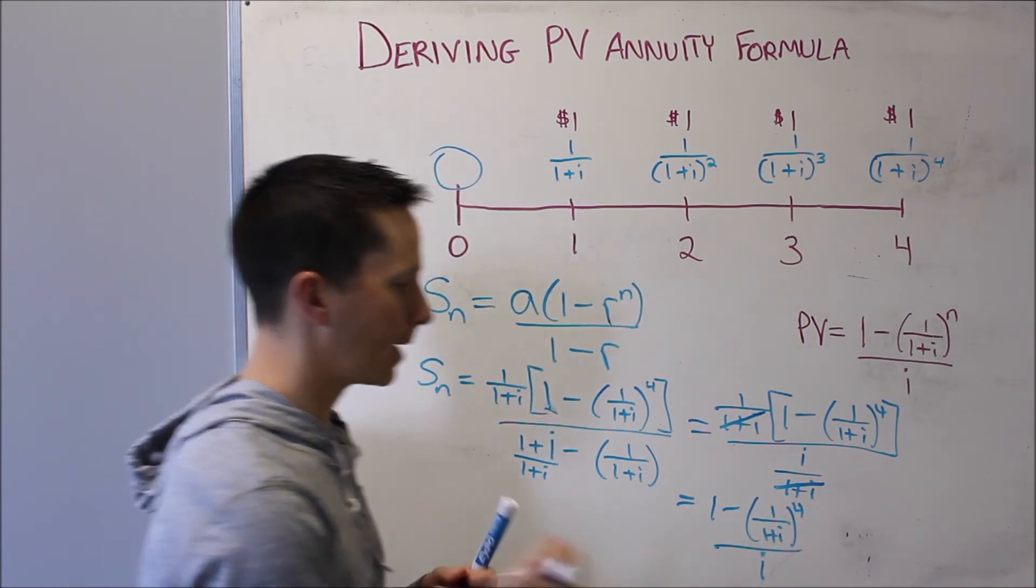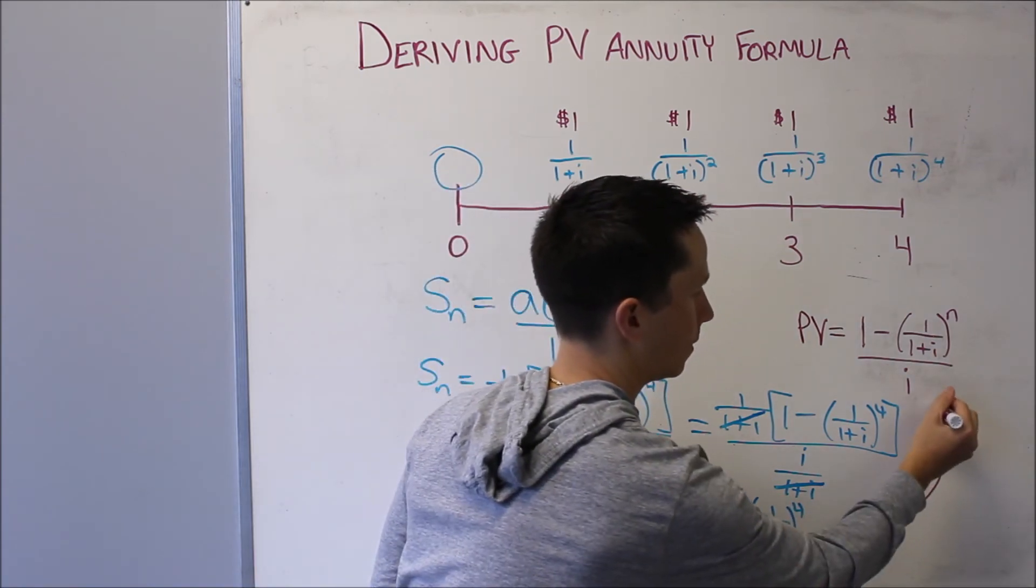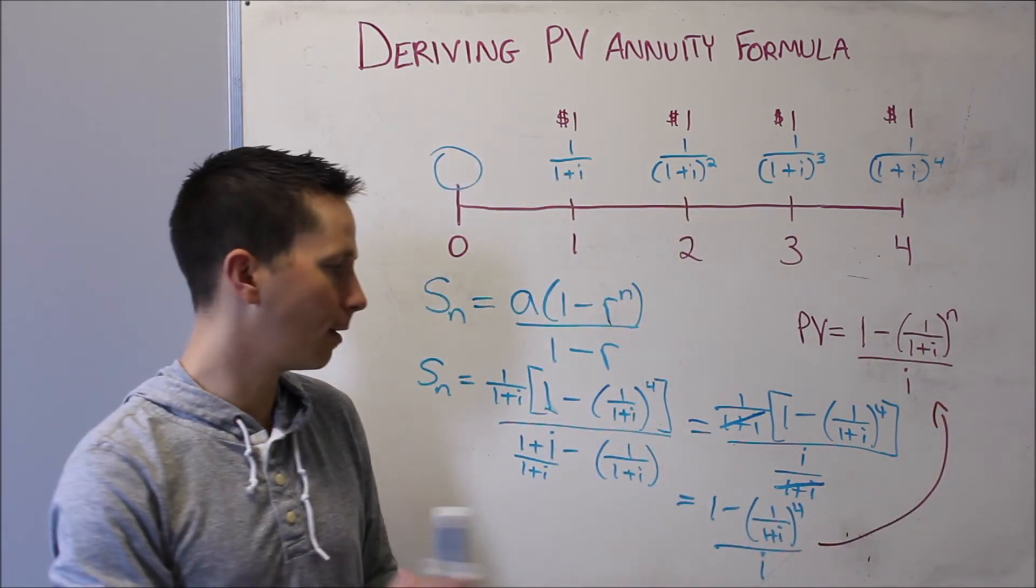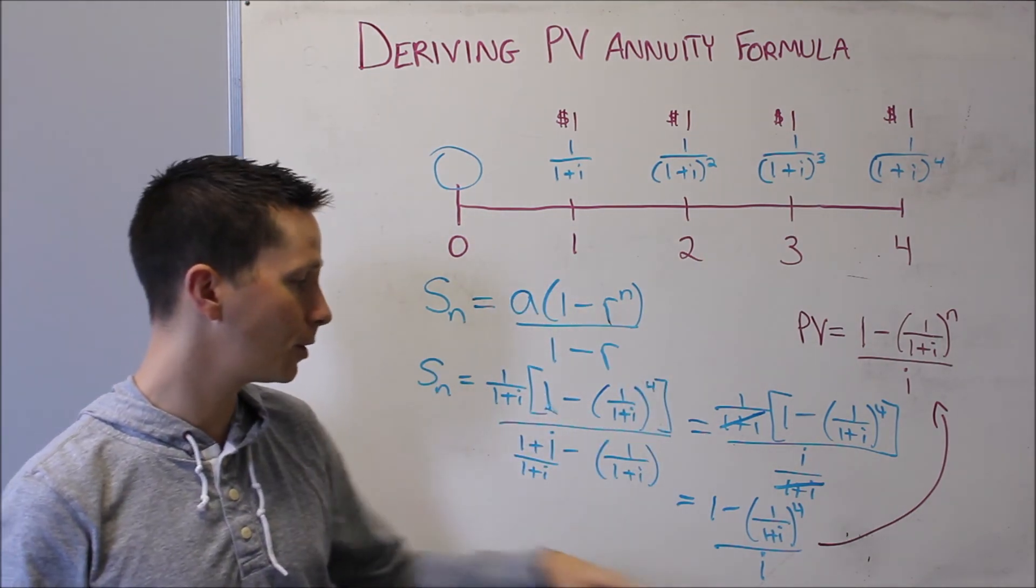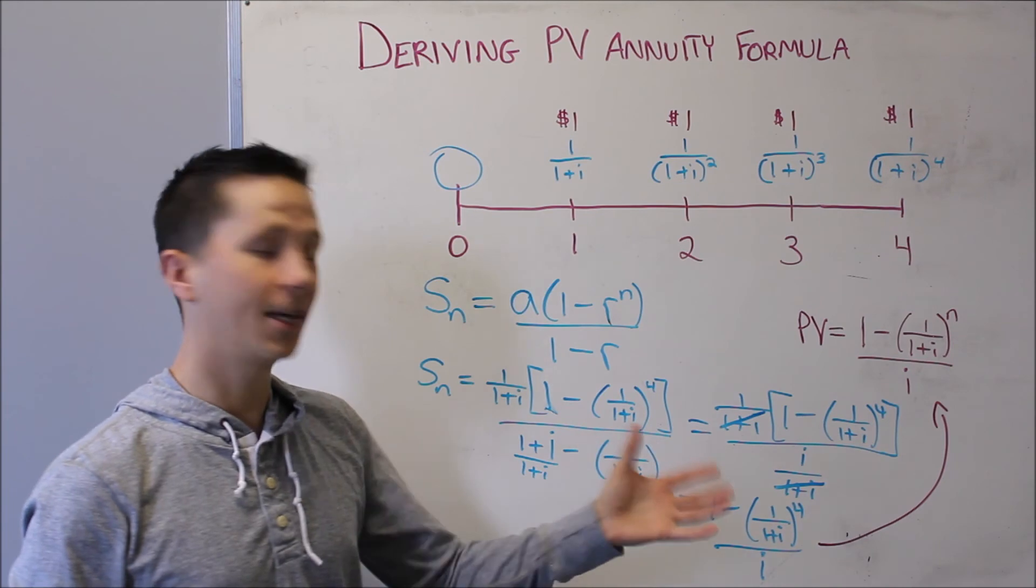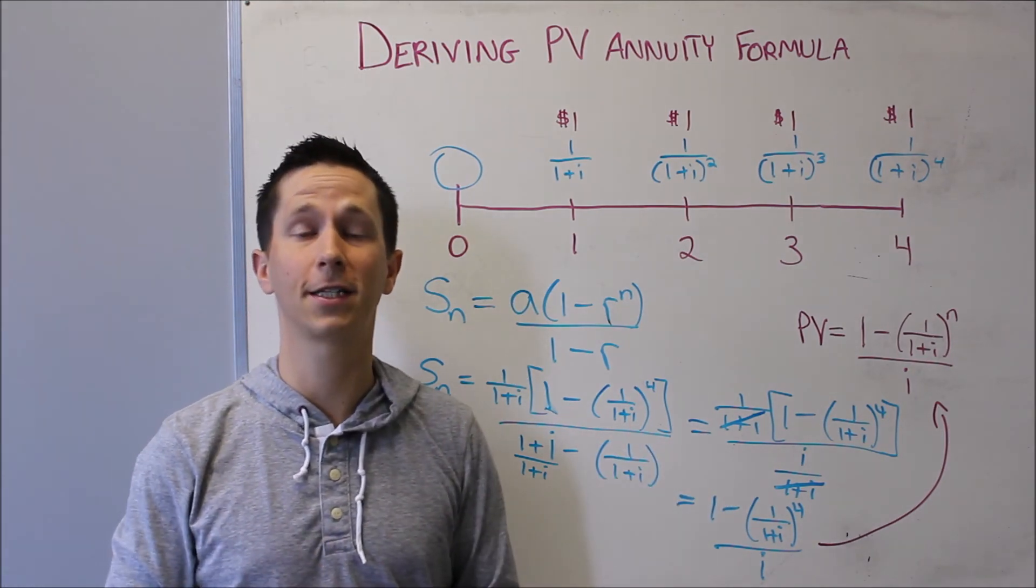Leaving us with 1 minus 1 over 1 plus i to the 4 over i. And this exactly matches our initial formula. n is 4 because there were 4 periods, 4 payments being made out in the future. We're dividing by i, and so it's fairly simple algebra that cleans up that formula.